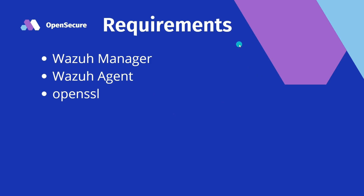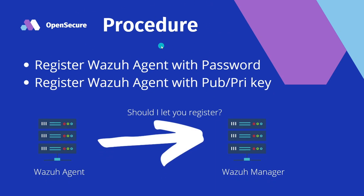In this video, I want to show you how we can set up password authentication as well as a public-private key pair authentication. Requirements for this video: we will need a Wazuh manager, a Wazuh agent, and OpenSSL, which should already be installed when you did the Wazuh manager install. We'll cover registering Wazuh agents with a password, then generating a root CA on our manager to sign agent certs and authenticate with the Wazuh manager.